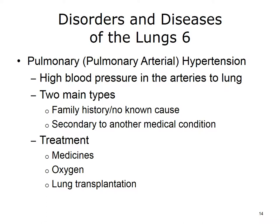The final lung disorder discussed in this lecture is pulmonary hypertension. Pulmonary hypertension is high blood pressure in the arteries to the lungs. It is a serious condition for which there are treatments but no cure. With pulmonary hypertension, blood vessels that carry oxygen-poor blood from the heart to the lungs become hard and narrow, and the heart has to work harder to pump the blood through. Over time, the heart weakens and patients can develop heart failure. One type may be related to past family history or appear for no reason. The other type is related to another medical condition, usually a heart or lung disease. Treating pulmonary hypertension involves treating the heart or lung disease, using medicines, oxygen, and sometimes lung transplantation.